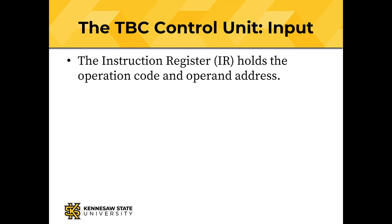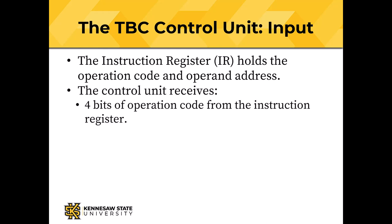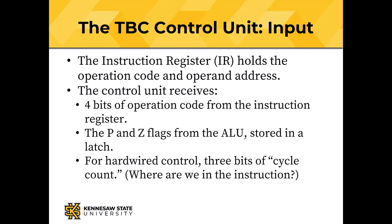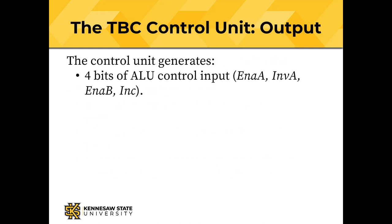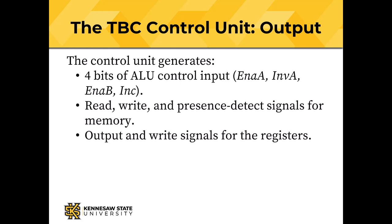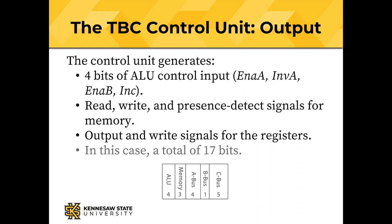Let's look at the control unit for TBC, the Tiny Binary Computer. The instruction register holds the operation code and the operand address. The control unit receives four bits of operation code from the instruction register, the P and Z flags from the PZ latch, and for hardwired control units, three bits of cycle count telling us where we are in the instruction cycle. The control unit generates four bits of ALU control (enable A, enable B, invert A, and increment), read/write/presence-detect signals for memory, and output and write signals for each register — a total of 17 bits: four for the ALU, three for memory, four for the A bus, one for the B bus, and five for the C bus.